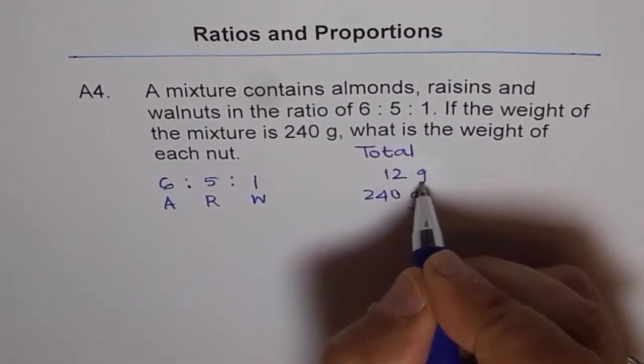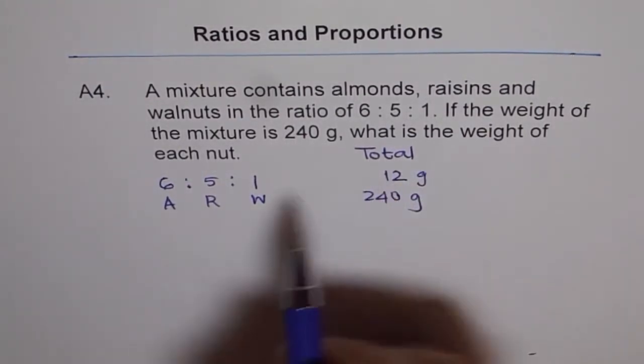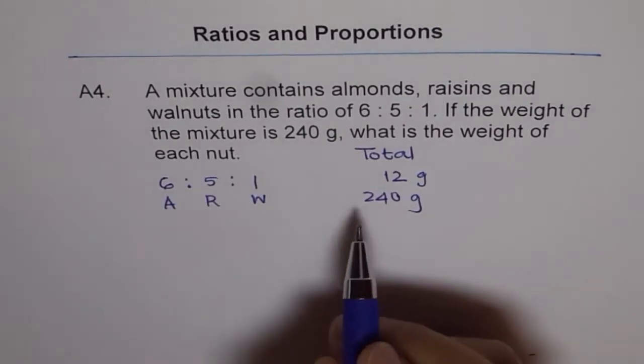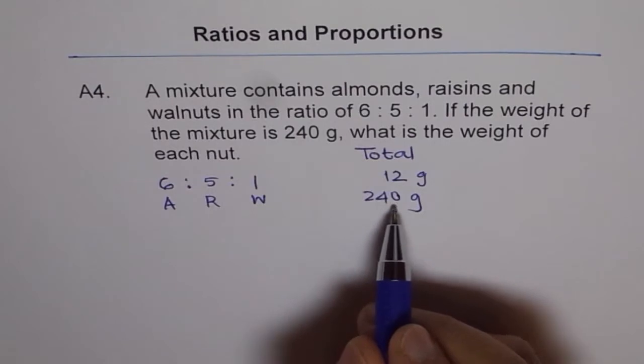So if it is 12 grams, then each nut will be 6, 5 and 1 gram each. But the total is scaled to 240, correct? So the scale factor is 20 times.